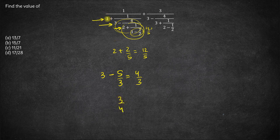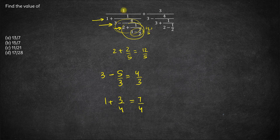So we have 1 upon 4/3, which is effectively 3/4. Now we are solving 1 plus 3/4. So 1 plus 3/4 is 4 into 1, which is 4 plus 3, giving 7/4. So effectively we have 1 upon 7/4. This whole expression comes out to be 4/7. So the first term simplifies to 4/7.